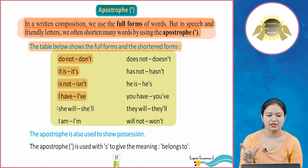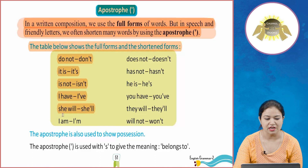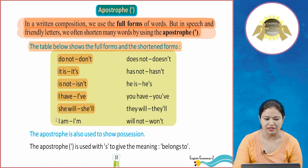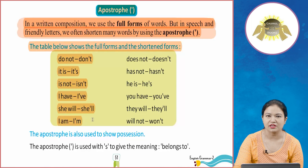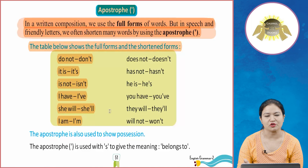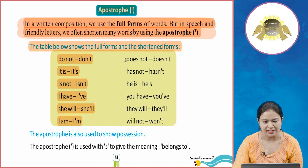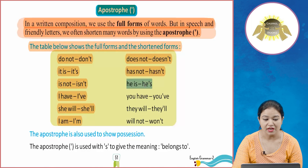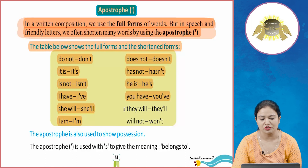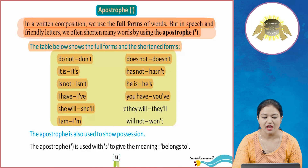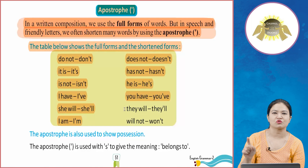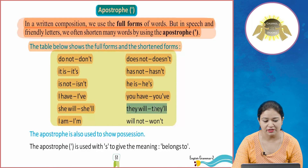For example, to shorten 'I am' we remove 'a' and put an apostrophe, giving us 'I'm'. Similarly, 'does not' becomes 'doesn't', 'has not' becomes 'hasn't', 'he is' becomes 'he's', 'you have' becomes 'you've', 'they will' becomes 'they'll', and 'will not' becomes 'won't'.